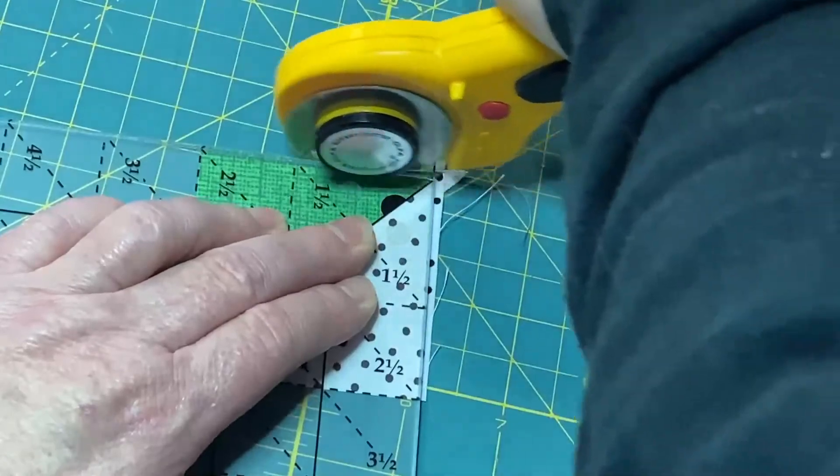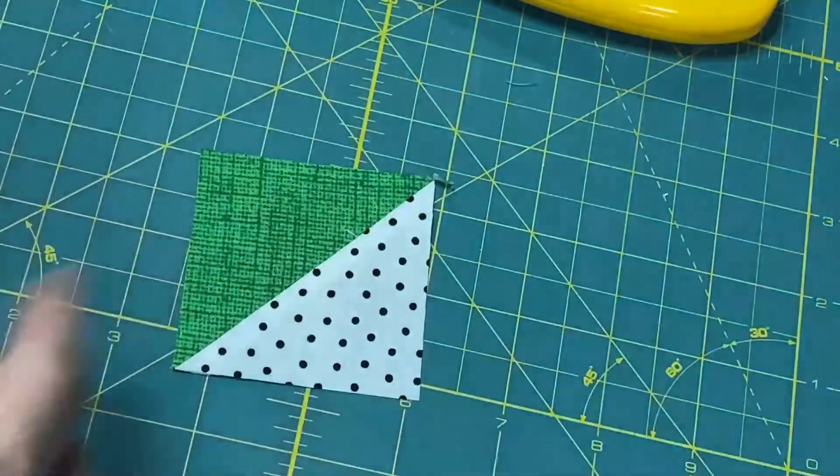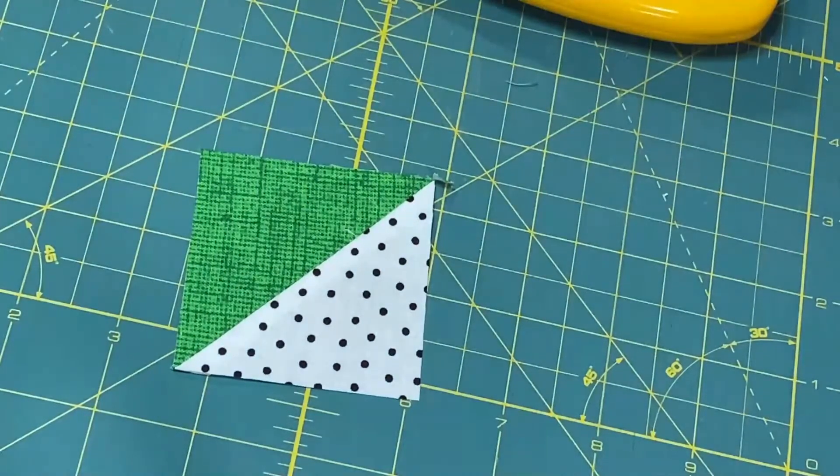Again, cutting up and over. I'm going to remove those trimmings, and I now have a perfect half-square triangle unit.